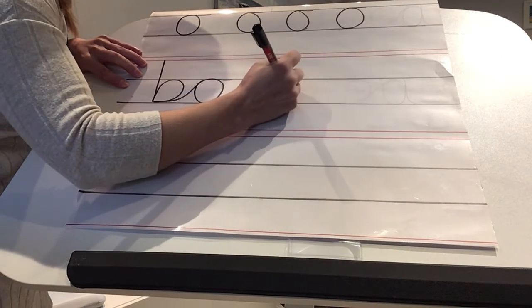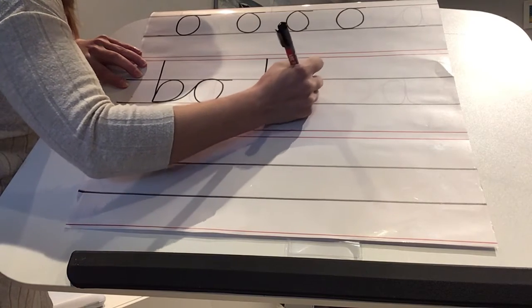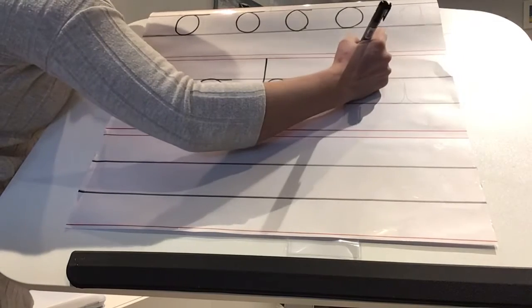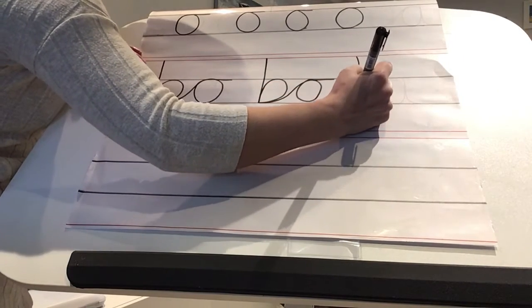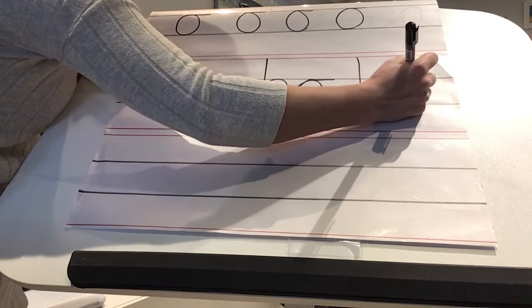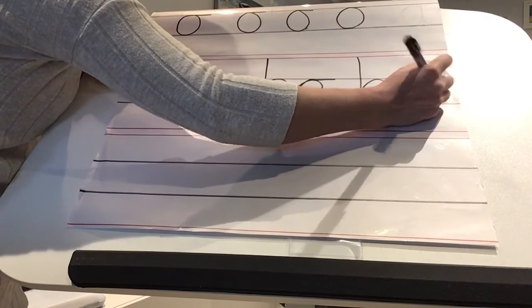So down, up and over, lead out, into your O and across. I'll do one more. Down, up and over, start, but then change direction, lead out.